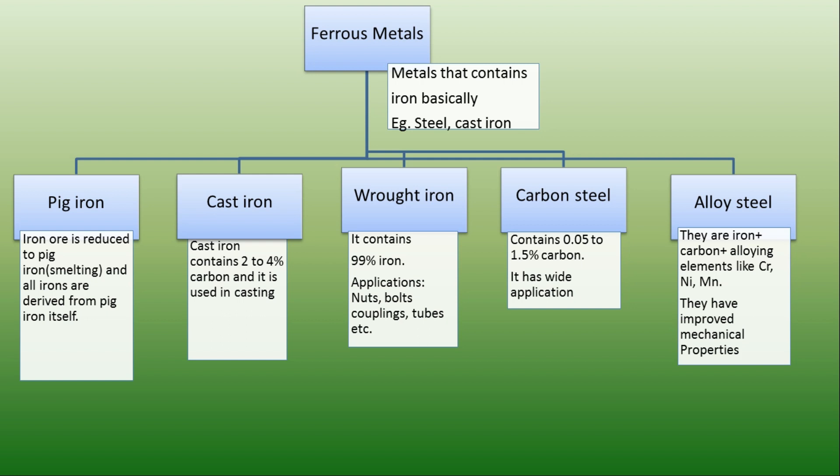Tool steels are added with alloying elements like tungsten and they are basically used for machining. Stainless steel is the most widely used steel in utensils due to its non-corrosive nature. It contains 15–30% chromium and some small amount of nickel. They are also used in industries like dairy and breweries.